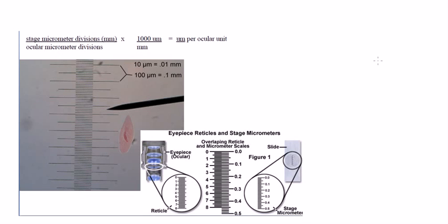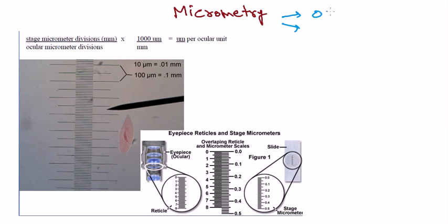Welcome back. In this video tutorial we are going to talk about a mathematical calculation that is very much required for a microbiologist in the practical lab, and that is micrometry. Micrometry means we are doing the micrometry of microscopic ocular and stage divisions. We are having two important things: one is the ocular scale and another one is the stage scale. Micrometry is required to measure the length, diameter, and breadth of different microscopic substances.